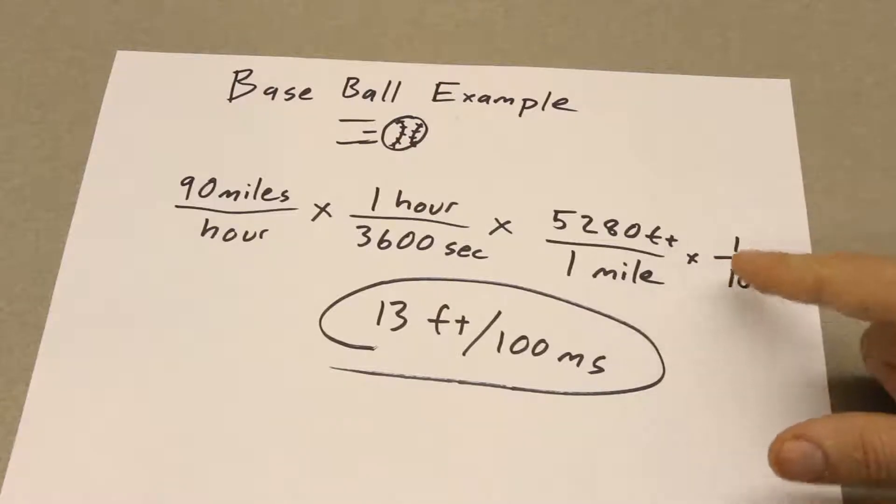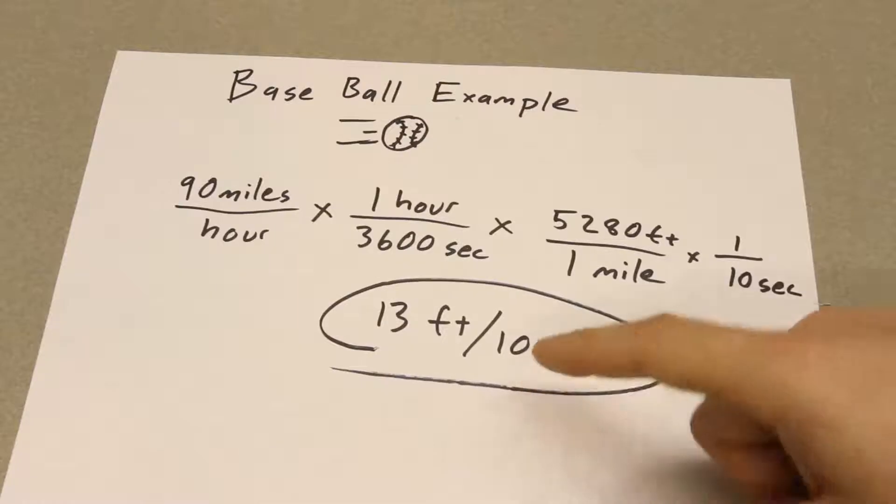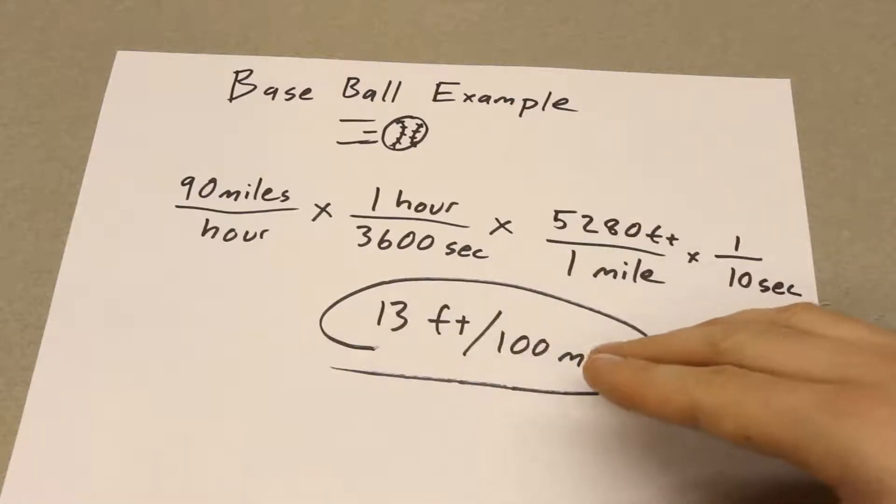And then the typical shutter lag is around 100 milliseconds or a tenth of a second. So I multiply it by that. And I get this 13 feet per 100 milliseconds, which basically means that the baseball is going to travel 13 feet during your shutter lag. That's a long ways.